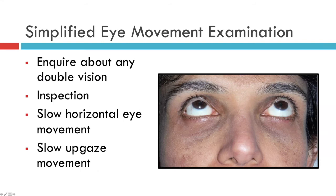Next, instruct the patient to follow your pen torch as you move it slowly upwards. A patient with acutely raised intracranial pressure may exhibit convergence retraction nystagmus, also known as Parinaud's sign, where on attempted up-gaze the eyes develop a nystagmus of convergence and can also be seen slightly retracted back into the eye socket. After sustained up-gaze of 20 or 30 seconds, the patient may develop a ptosis — a droopy eyelid — suggestive of myasthenia gravis. These two conditions can be ruled out by simply getting the patient to look straight up.